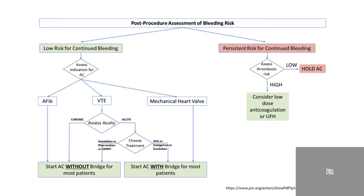There are also guidelines for restarting anticoagulation and antiplatelet agents. For patients with low bleeding risks, anticoagulation can be started without a heparin bridge for most patients. But if the patient has atrial fibrillation, acute blood clots with plans for novel oral anticoagulants, or a mechanical heart valve, anticoagulation should be started with a heparin bridge. If a patient has persistent risk for continued bleeding, the risk of thrombosis should be assessed using guidelines such as CHAD-VASC. If the thrombosis risk is low, anticoagulation can usually be held. If the risk is high, low-dose anticoagulation with unfractionated heparin should be considered.